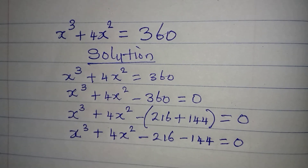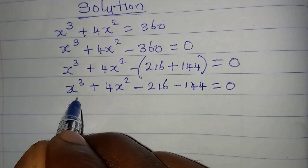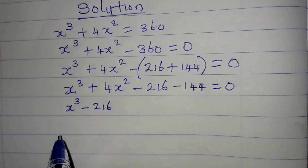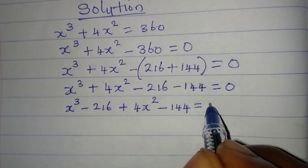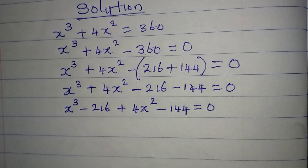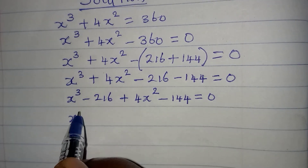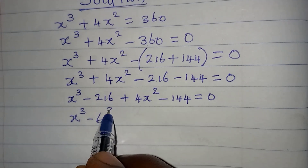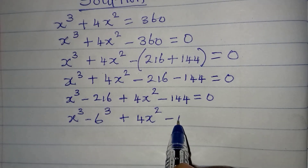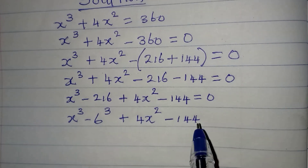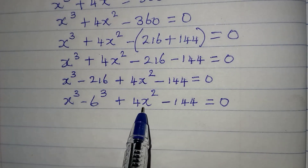Now let's continue. We have x to the power of 3 plus 4x squared minus 216 minus 144, using the negative to open the bracket, and this equals zero. Now we begin to rearrange: x to the power of 3 minus 216, then 4x squared minus 144 equals zero. Remember, 216 is 6 to the power of 3.